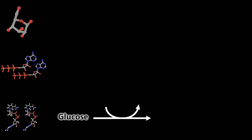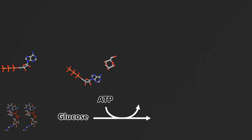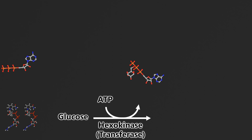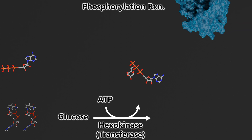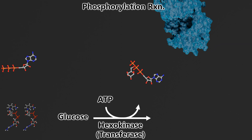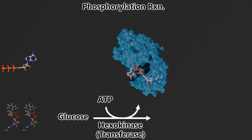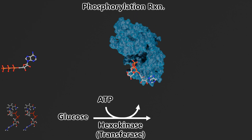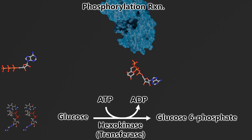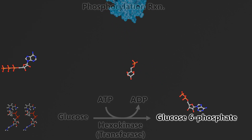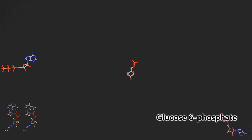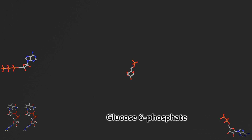In our first reaction, we are going to need glucose and ATP as our reactants. The enzyme hexokinase is going to catalyze the phosphorylation of glucose and that will produce glucose 6-phosphate. Every time we have a kinase, kinases are going to add phosphates to molecules. So hexokinase adds a phosphate to our 6-carbon sugar here to produce our glucose 6-phosphate.